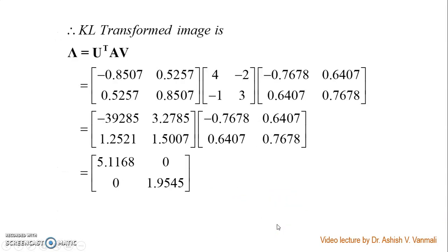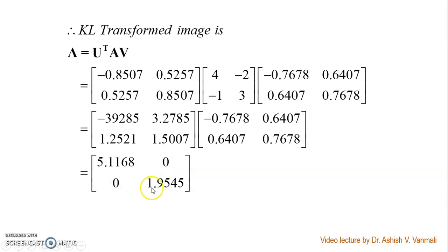Now we can find the transformed image. The transformed image, capital Λ, equals U transpose · A · V. Substituting the values of U transpose, A, and V and performing the matrix multiplication, the final transformed image is: 5.1168, 0, 0, 1.9545. The non-zero terms appear only along the principal diagonal; the off-diagonal terms are 0.